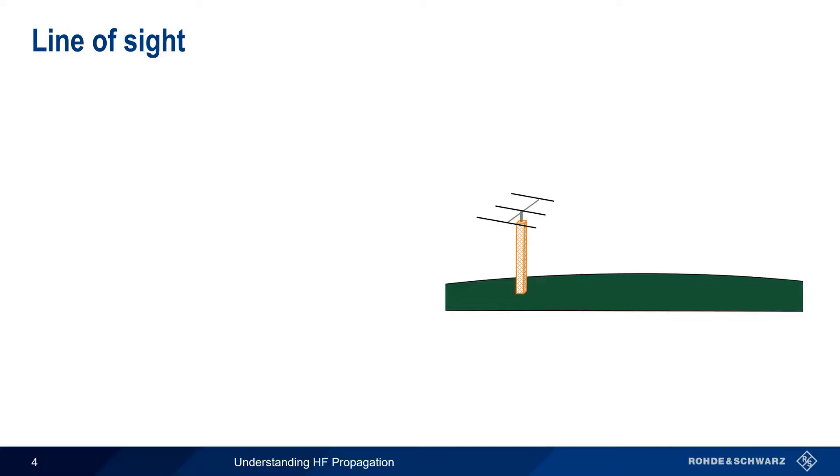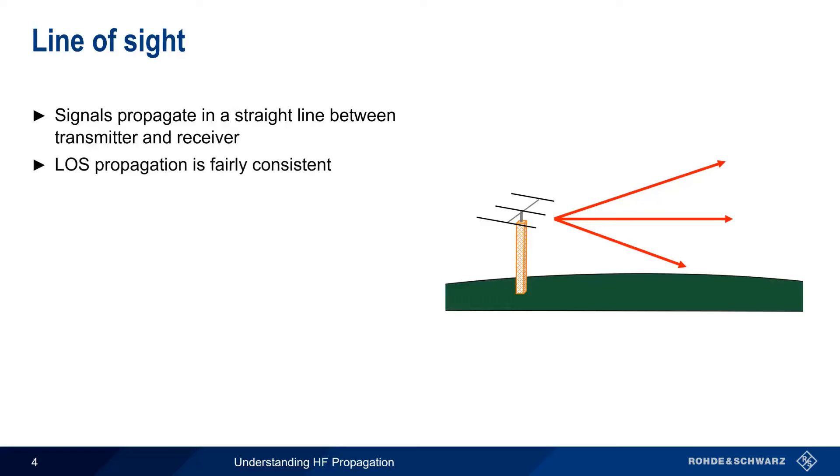Line of Sight is fairly easy to understand. Signals propagate in a straight, unobstructed path between the transmitter and the receiver. Line of Sight is the only HF propagation mode which is fairly constant. Your ability to use Line of Sight to communicate with another station at a given location doesn't change much over periods of minutes, hours, days, months, years, etc.